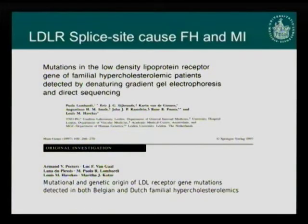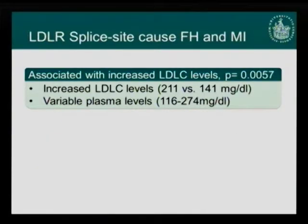To understand how this domain influences disease, we performed a literature search and found this variant had been described earlier in 1997 by Peters et al., where it was associated with hypercholesterolemia. Looking at the cholesterol levels of all mutation carriers in our family, we found they all had increased LDL cholesterol, significantly different from non-carriers. We had not initially identified hypercholesterolemia as the phenotype because plasma levels were very variable and the index patient had normal cholesterol levels.